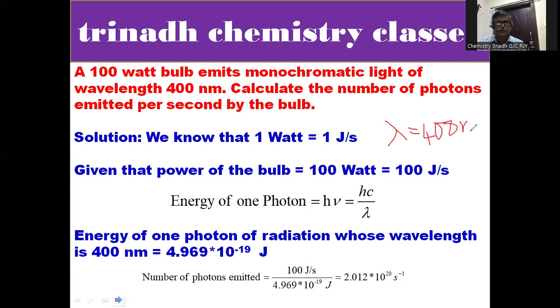1 nanometer is equal to 10 to the power of minus 9 meters. So 400 nanometers equals 400 times 10 to the power of minus 9 meters.